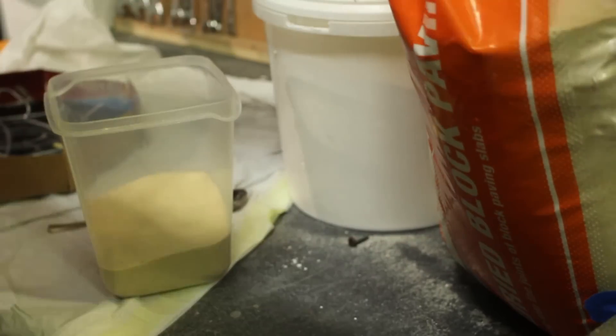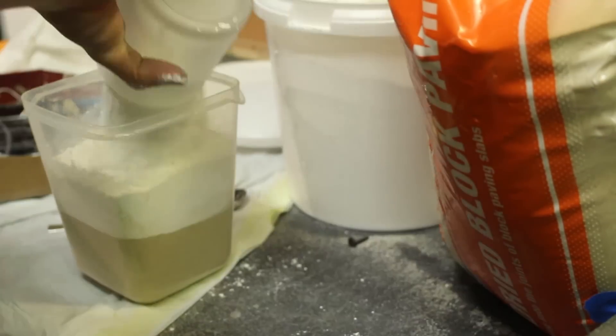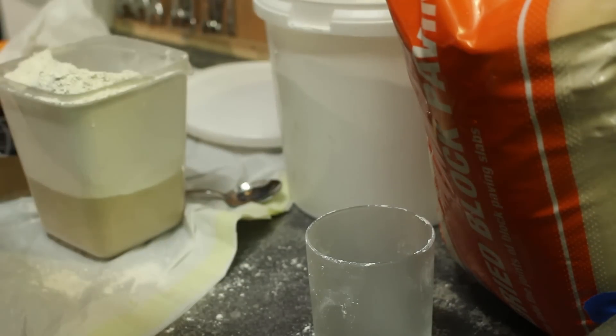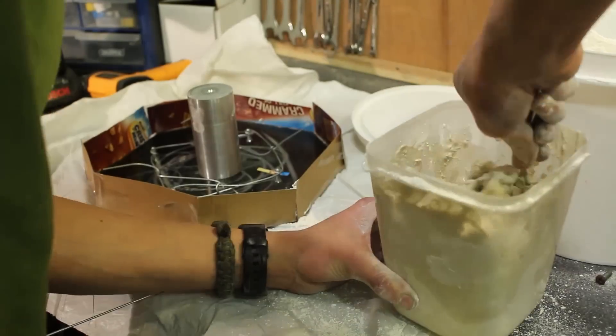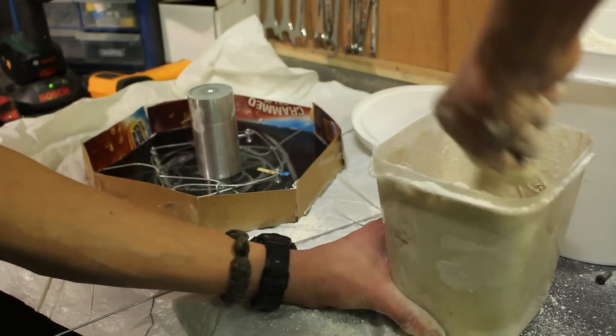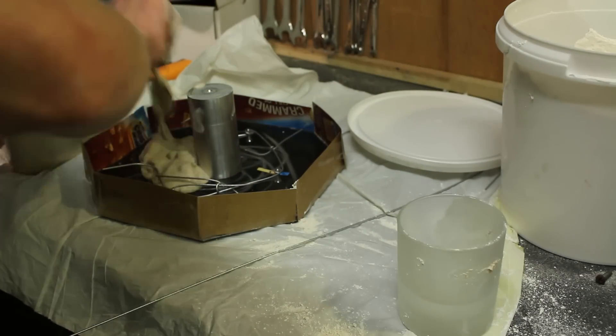I mix the plaster of Paris and sand 50-50 by volume and add quite a lot of water so that it's very liquid and then pour it into the mold. I'm just using fine sand from the hardware store and you can pretty much use any sand as long as it's quite clean, even beach sand or play sand. As you can see I've just got a block of aluminum right in the center which is going to be the hole which I'm going to use for inserting the metal when the forge is on because I want to have a hole in the lid.